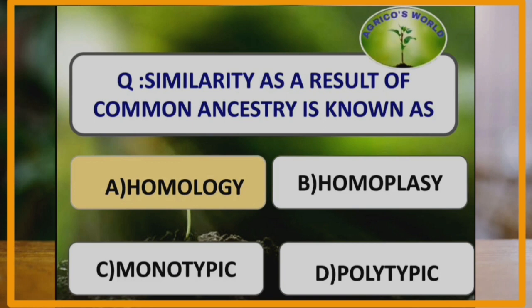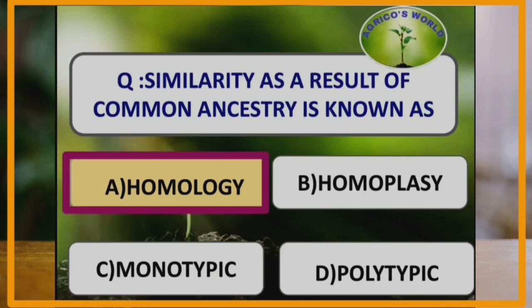Similarity as a result of common ancestry is known as homology. Homology is similarity as a result of common ancestry, whereas convergent or parallel evolution of structures either by chance or by selection for similar functions is called homoplasty.